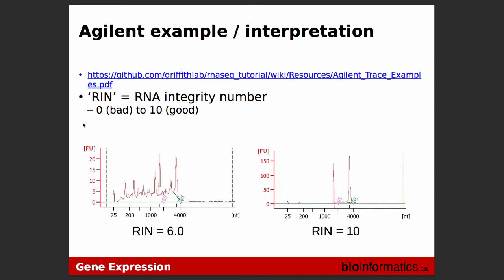Usually we pick RNA samples with a RIN of 7 or higher. But a lot of times you're given samples with very low RIN and bad quality. When that happens, instead of sequencing the whole batch, I suggest doing a pilot study — run one sample, see what kind of data you can get. If you can't get anything useful out of it, then there's no point in continuing and you should ask for better samples.